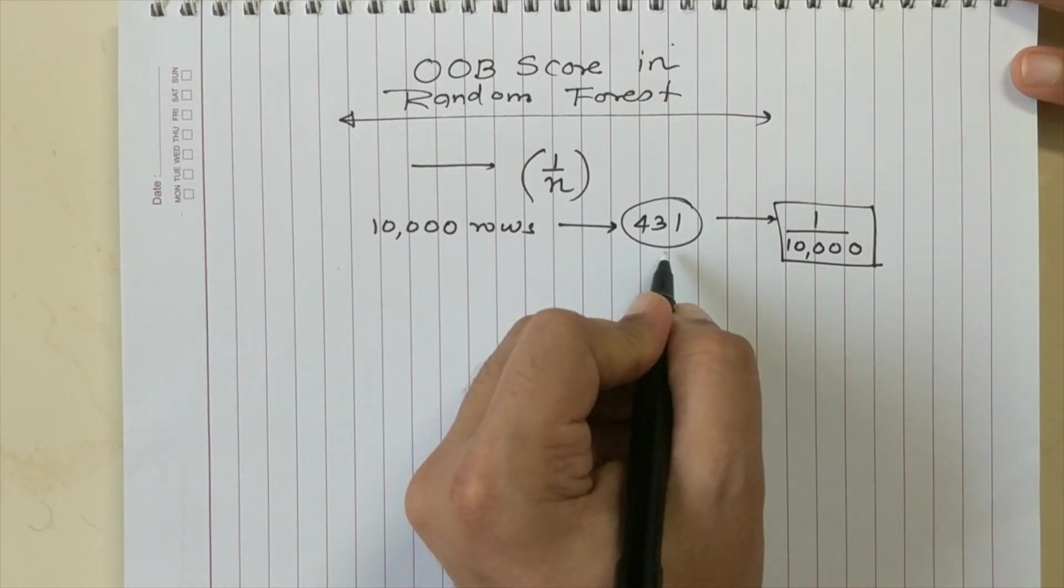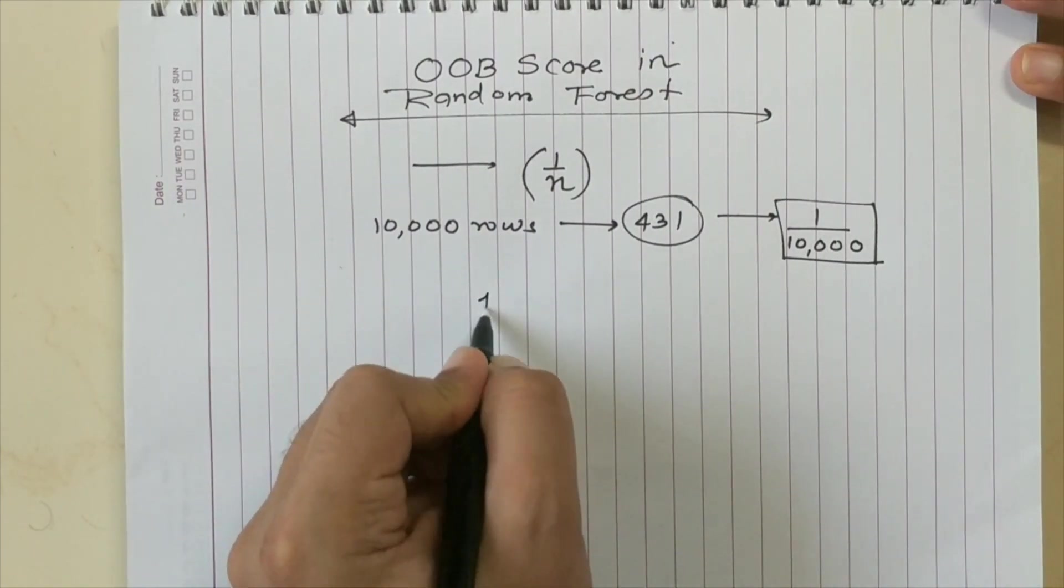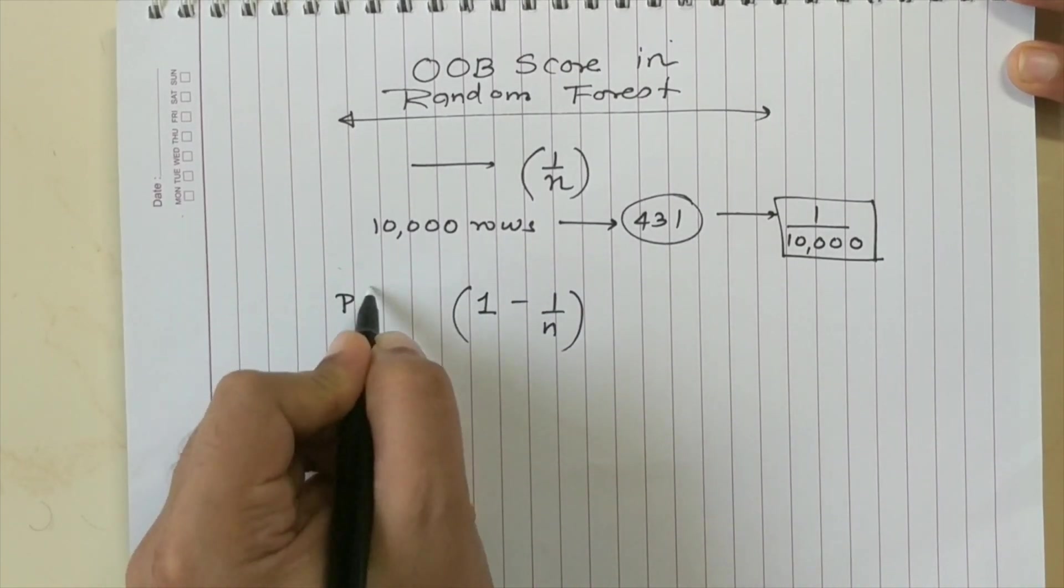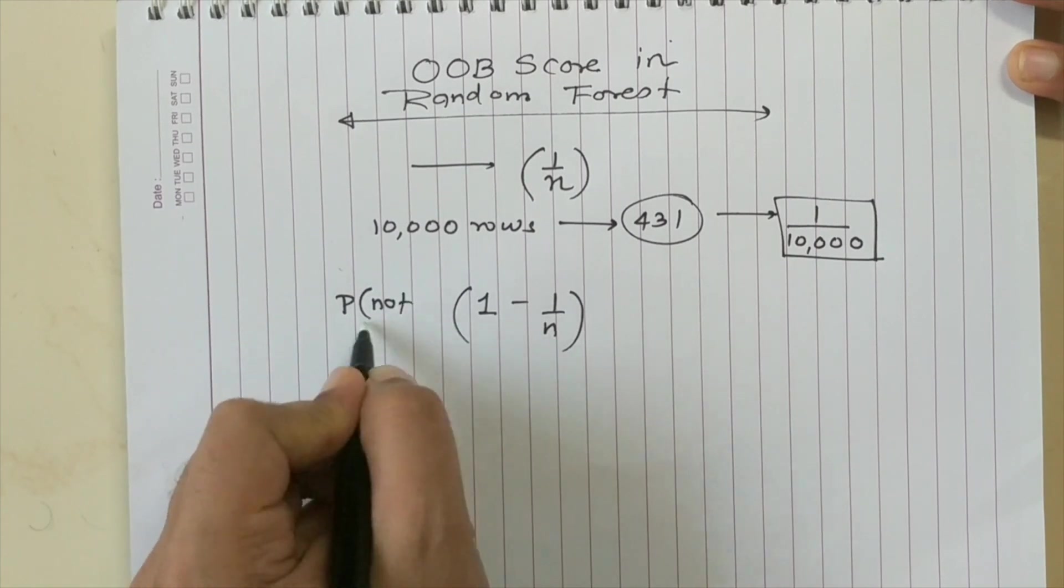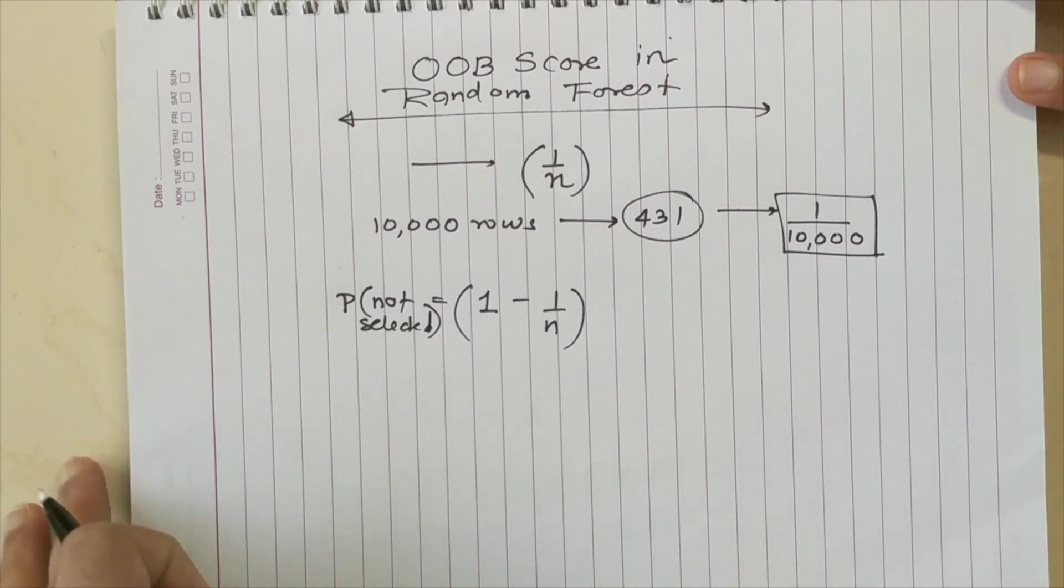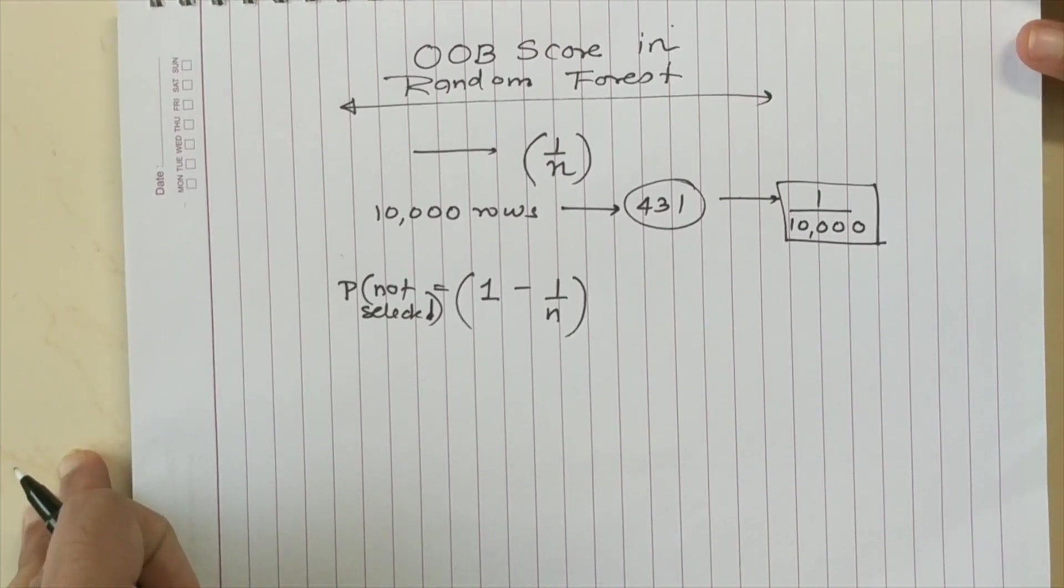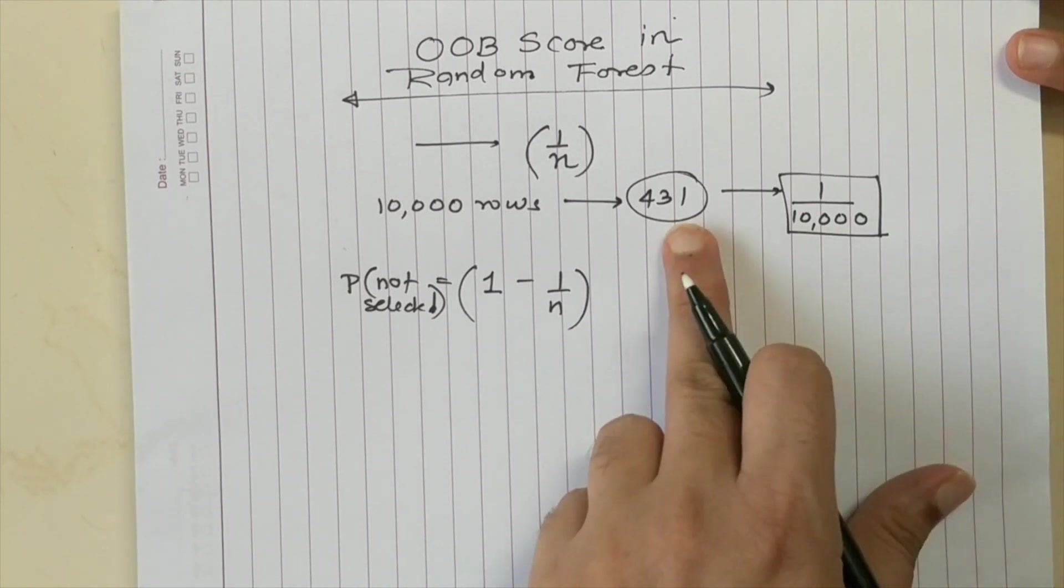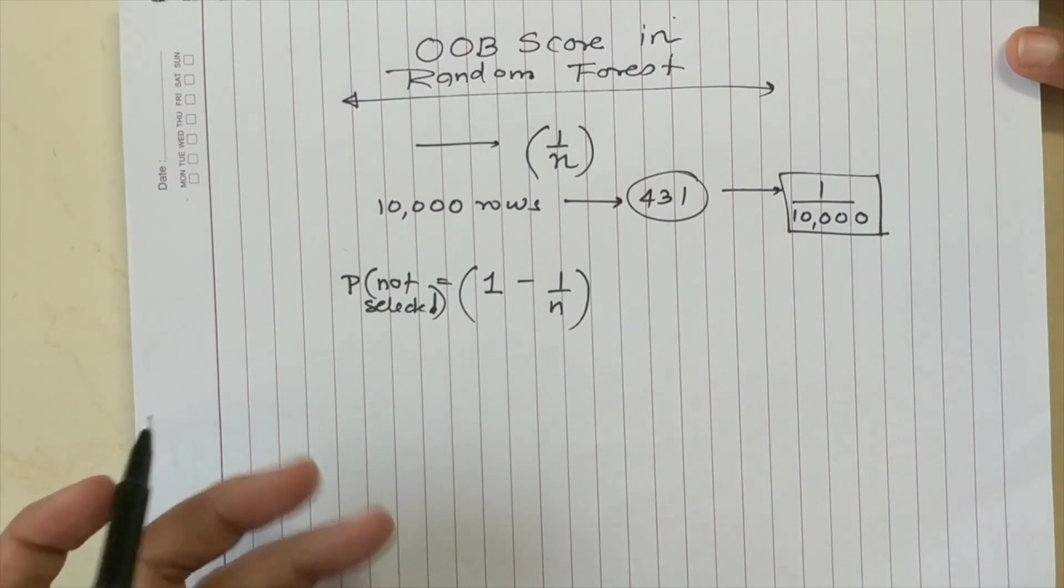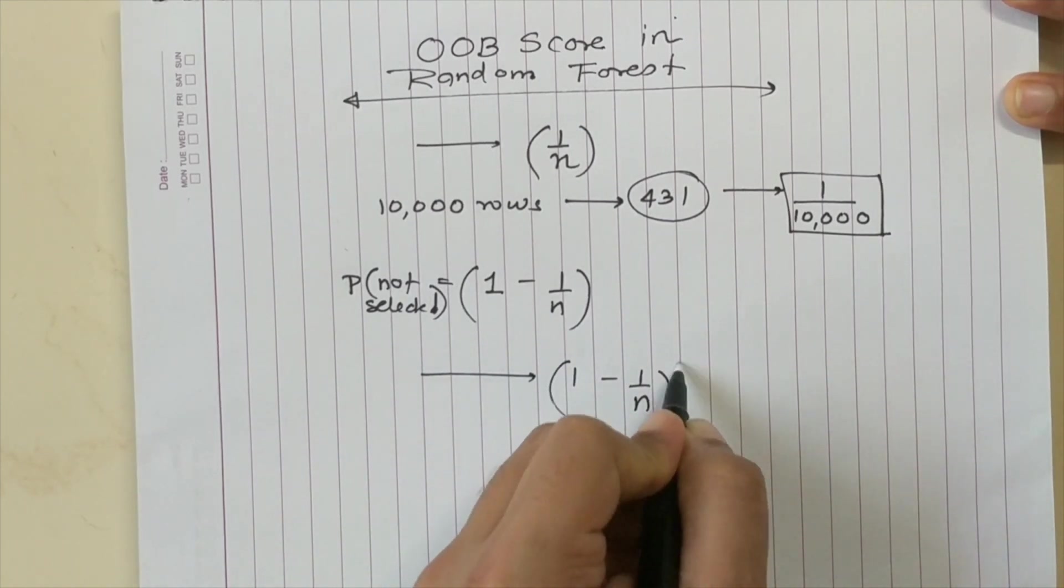Probability of this row being not selected is 1 minus 1 by N. Now as we know the bootstrap samples are selected with replacement. So the probability of this row, which is say 431, not being selected in N draws is 1 minus 1 by N to the power N.